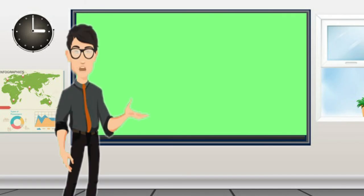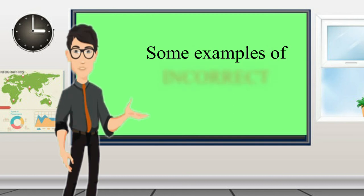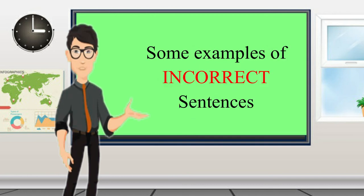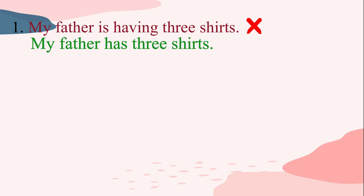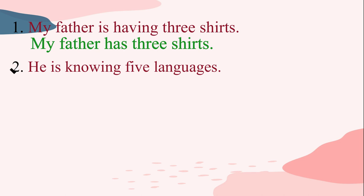A present perfect continuous sentence is formed by a verb form followed by '-ing', which is followed by 'has been' or 'have been' depending upon whether the subject is singular or plural. Based on what we have learned about the present tense, here are some examples of incorrect sentences that we hear in common use. 'My father is having three shirts' is an incorrect sentence. The correct sentence would be 'my father has three shirts', because the sentence is expressing a fact that is true at the time of speaking — therefore it would be in simple present tense.